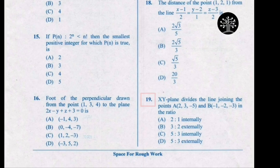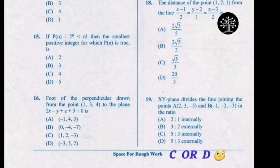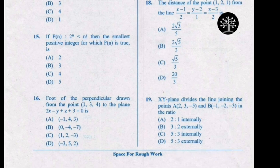In this question, the probability of the correct option being option C or option D — both are having a similar start. Now to decide the correct answer, whether internally or externally, we take the help of other options. Option B has the number 3 and the word 'externally', so this supports option D which also has 'externally'. Therefore our correct answer will be option D.